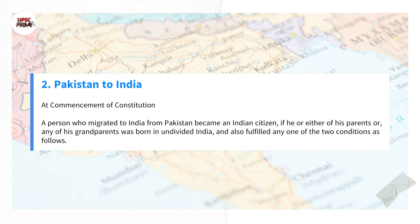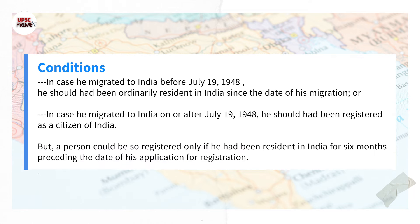Category 2: A person who migrated to India from Pakistan became an Indian citizen if he, or either of his parents, or any of his grandparents was born in undivided India, and also fulfilled one of two conditions. In case he migrated to India before July 19, 1948, he should have been ordinarily resident in India since the date of his migration.